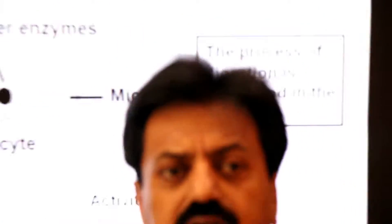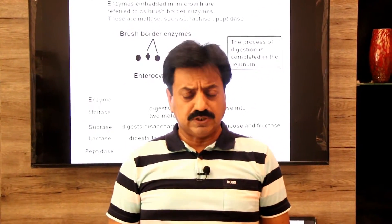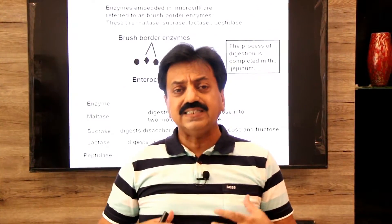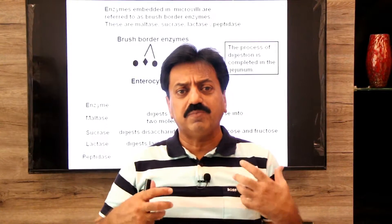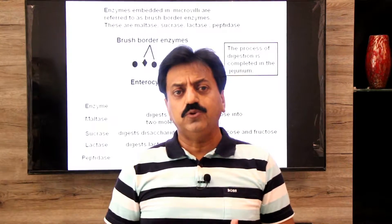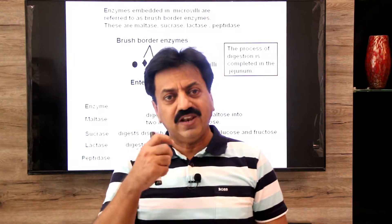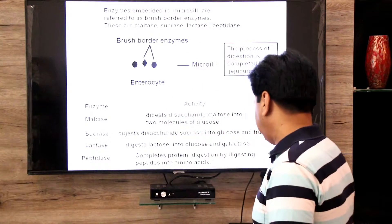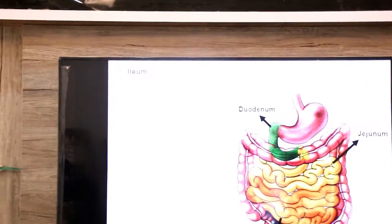Dear students, digestion is completed in the jejunum. After that we move to the next section, the ileum, where the end products are absorbed through finger-like projections. As you know, these finger-like projections are called villi.